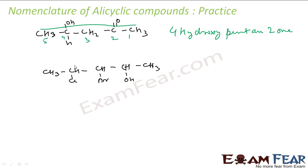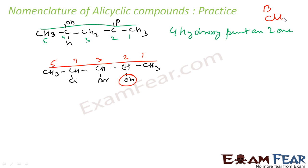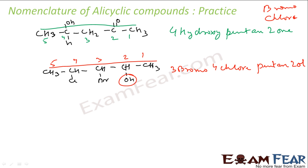Let's name this compound. This has an OH group, Br, and Cl. Hydroxy, bromo, and chloro groups. Hydroxy has the highest priority out of all. So this is my longest chain and I'll number from this end because I want to give the lowest number to the hydroxy group. I have two prefixes — bromo and chloro. B comes before C, so I'll write bromo first. Bromo is at third position — 3-bromo. Chloro at fourth position — 4-chloro. Five carbons — pent — all single bonds. At second position I have alcohol — pentan-2-ol. So it's 3-bromo-4-chloropentan-2-ol.